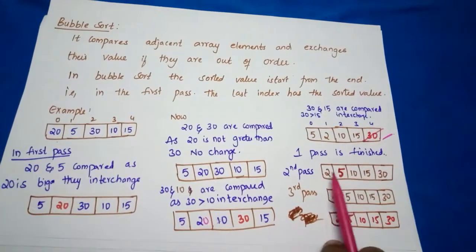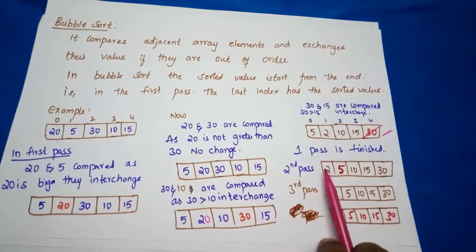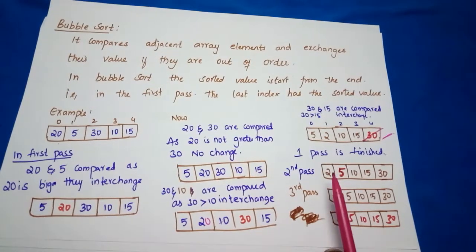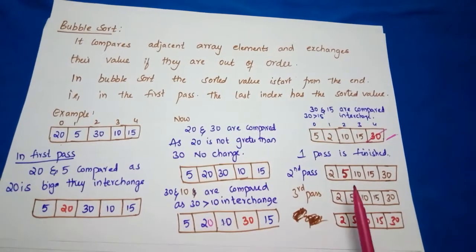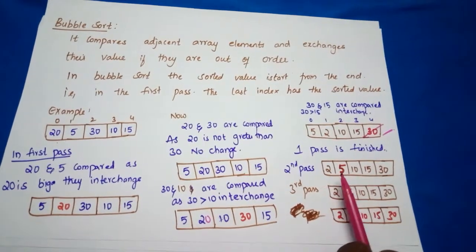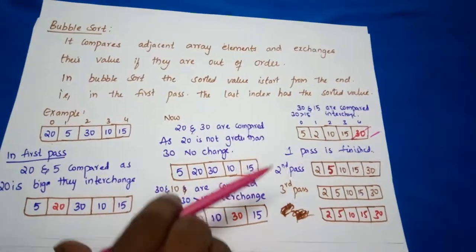So 2 will be interchanged and 5 will get here. Again we have to do these things: 5 is greater than 10? False. Again, 10 is greater than 15? False. So in the second pass you'll get 2, 5, 10, 15, 30. Actually here we already done the sorting, but even though we go with all the other elements like next we go with 2, 5 and 5, 10, and next we go with 2 and 5. So in this way we do the bubble sort.